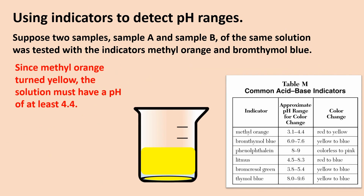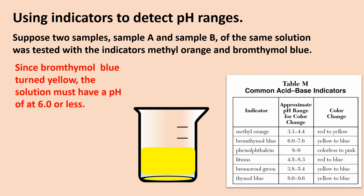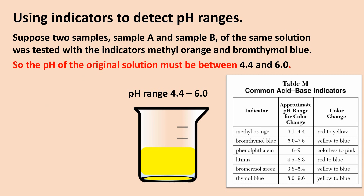Since methyl orange turned yellow, the solution must have a pH of at least 4.4. Since bromthymol blue turned yellow as well, the solution must have a pH of 6.0 or less. So the original solution must have a pH between 4.4 and 6.0.